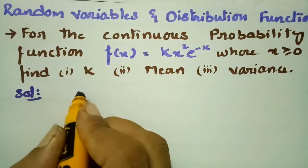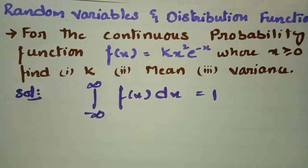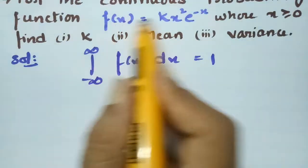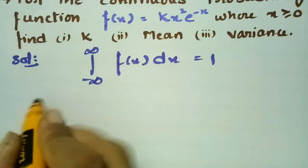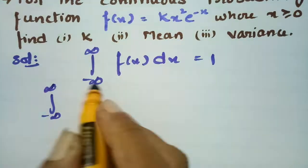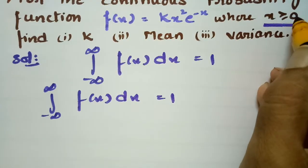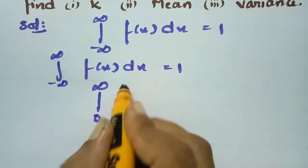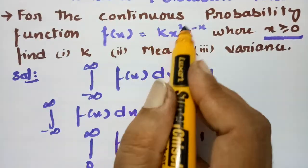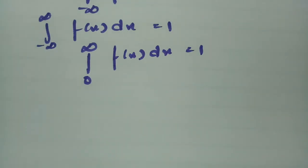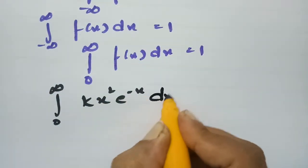In the solution, as we know that the total probability is unity — that is, the integral from minus infinity to plus infinity of f(x) dx is always equal to 1. Since x is a positive value, we consider the integral from 0 to infinity. So the integral from 0 to infinity of k x² e^(-x) dx is equal to 1.